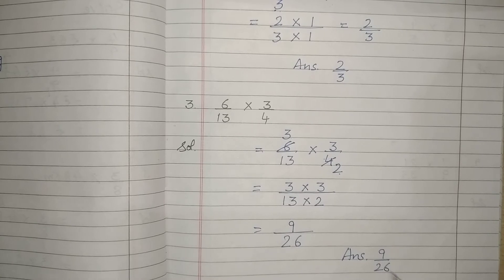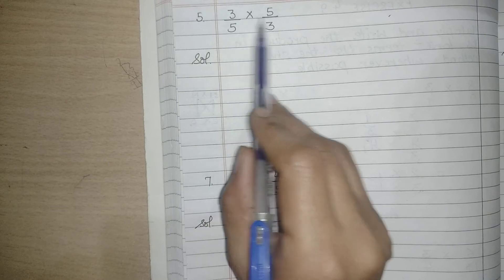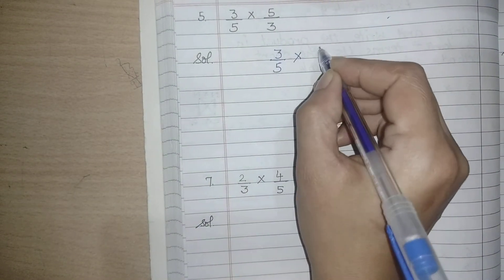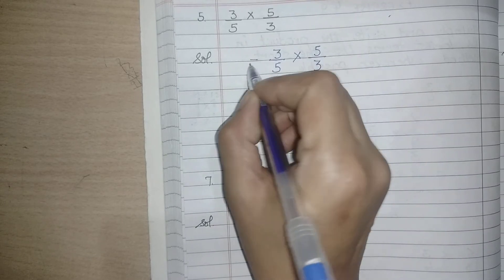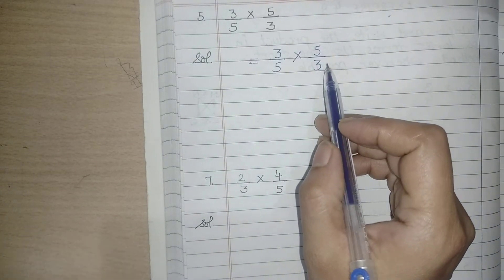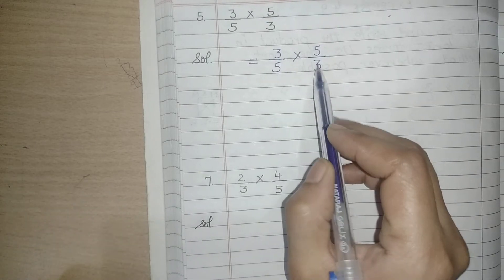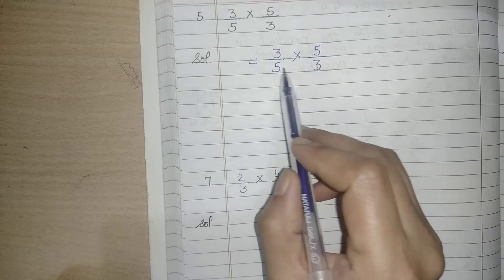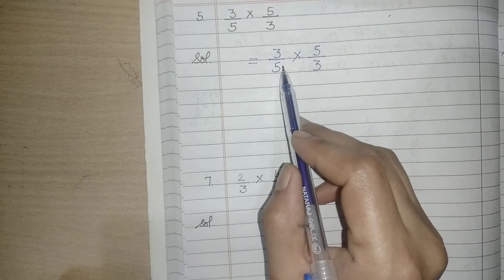I hope it is clear. Let us move to the next part — the 5th part: 3 upon 5 multiplied by 5 upon 3. We are multiplying a fractional number by a fractional number. Now we do cancellation — the cross numbers are exactly the same: both 3 and 3, and both 5 and 5.